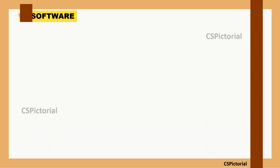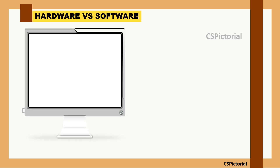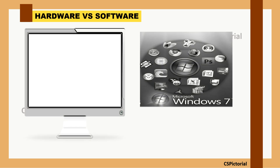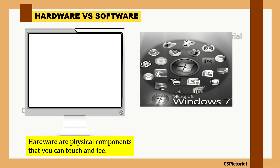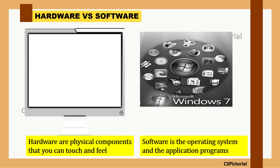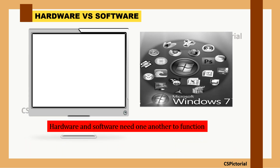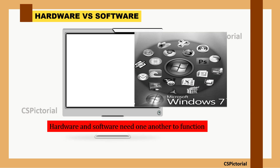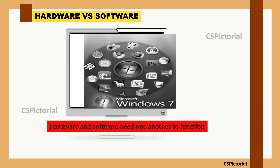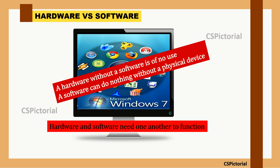To recap: hardware refers to the physical components that you can touch and feel, while software is the operating system and other application programs. Hardware and software need one another to function — a hardware without software is of no use, and software can do nothing without a physical device.